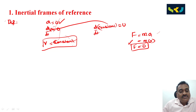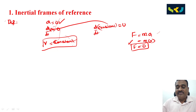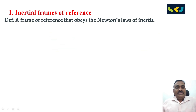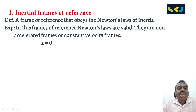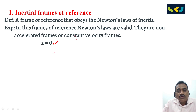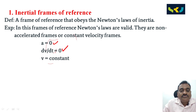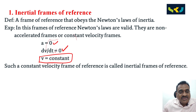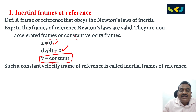Examples of inertial frames: first, an observer at rest on the Earth; second, a lift moving up and down with constant velocity. In these frames, Newton's laws are valid. Non-accelerated means acceleration equals zero, so the rate of change of velocity equals zero, and velocity is constant. Such a constant velocity frame of reference is called an inertial frame of reference, also known as a non-accelerated frame of reference.